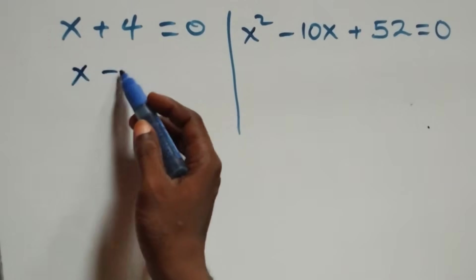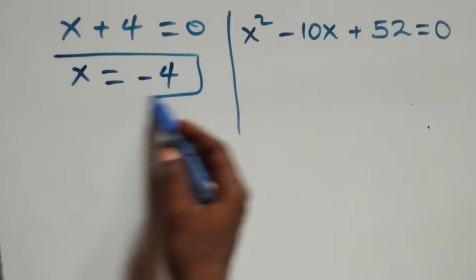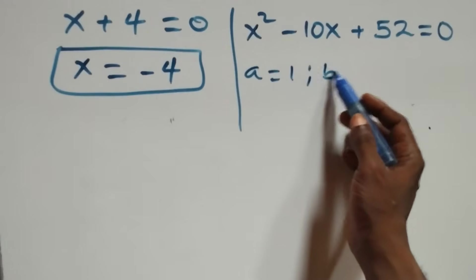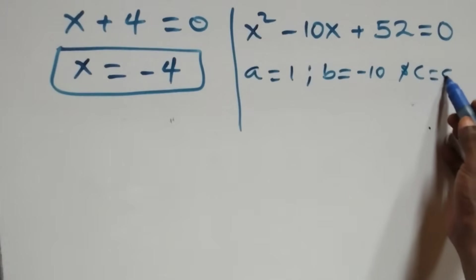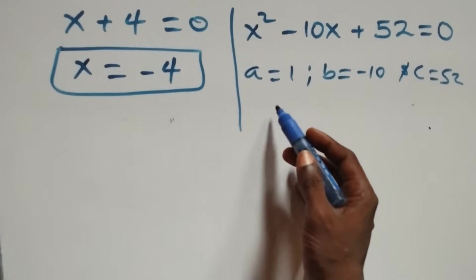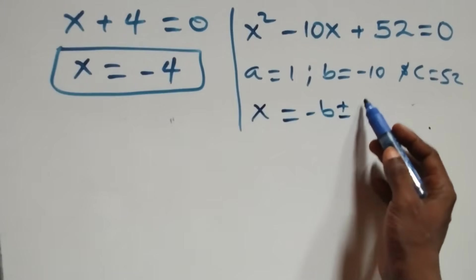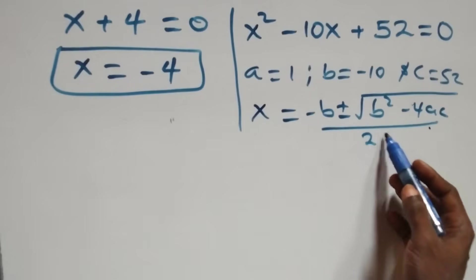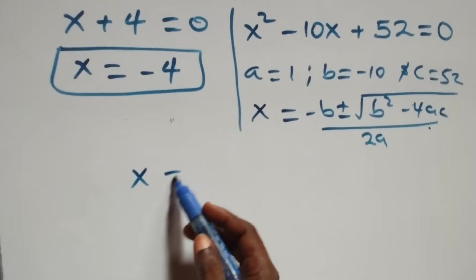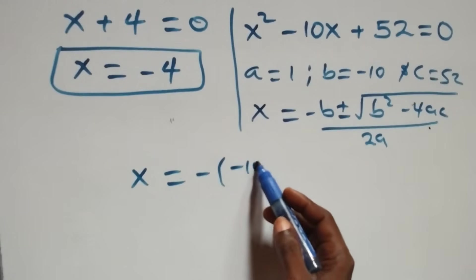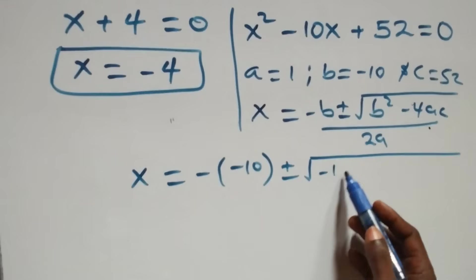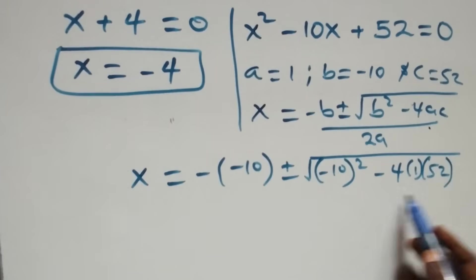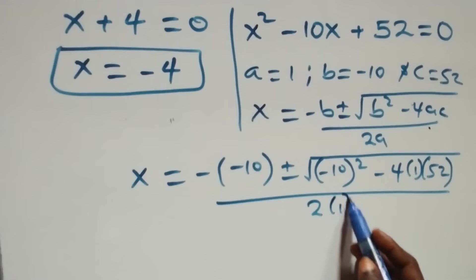Solving on this side we have x equals to minus 4, which is a real solution. On the other side we have a quadratic equation where a equals 1, b equals minus 10, and c equals 52. Applying the quadratic formula x equals to minus b plus or minus square root of b squared minus 4ac all over 2a, this becomes x equals to 10 plus or minus square root of 100 minus 4 times 1 times 52.